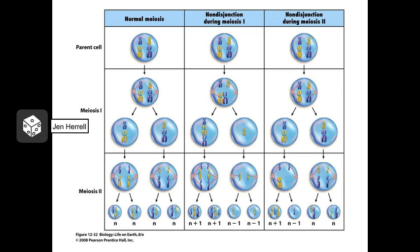When non-disjunction occurs in meiosis 2, the spindle fibers pull one or more of the sister chromatids in the wrong direction, causing it to move into the wrong daughter cell. This type of non-disjunction results in two normal haploid cells, one cell that has an extra copy of the chromosome, and one cell that lacks that chromosome altogether.